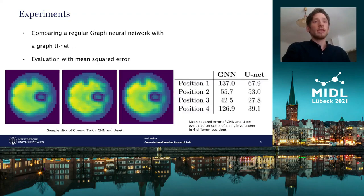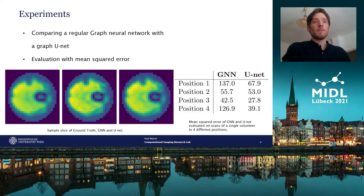On the test set, we reconstructed images from undersampled data by the GNN with self-connecting edges and the graph unit without these edges, and applied a Fourier transform in all spatial dimensions to reconstruct the image.